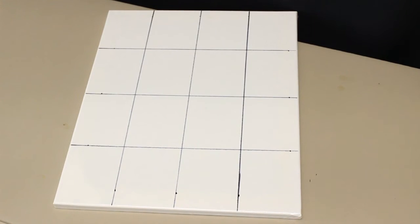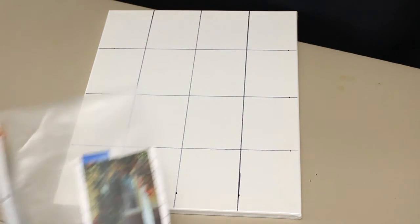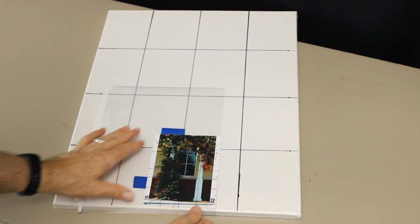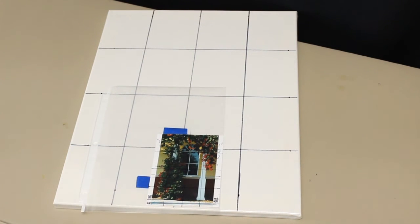My canvas is a 16 by 20, and I've divided into the same number of elements as my reference using a yardstick. When I enlarge my image, I'll have a small amount of blank space on the left and right of my canvas.